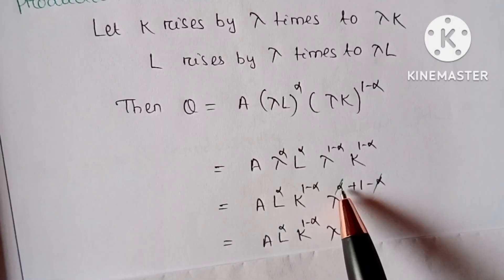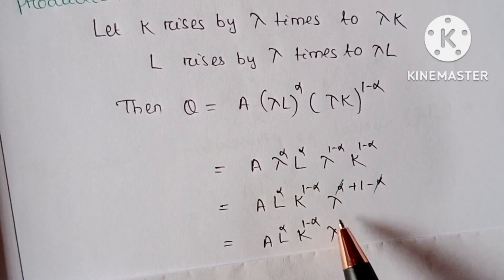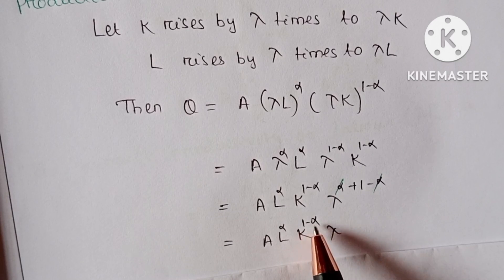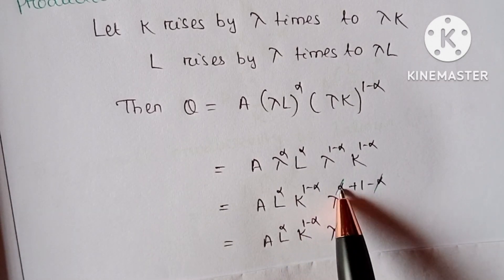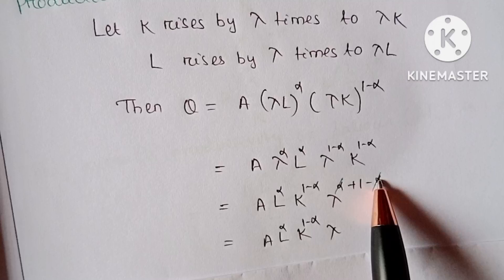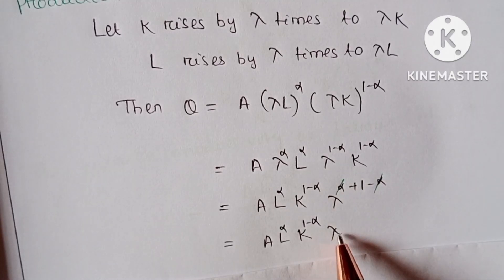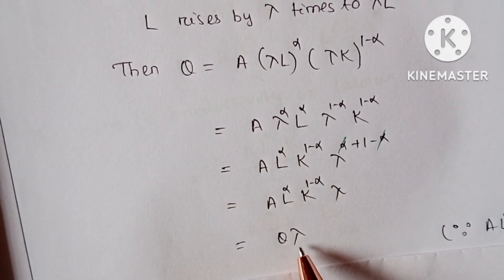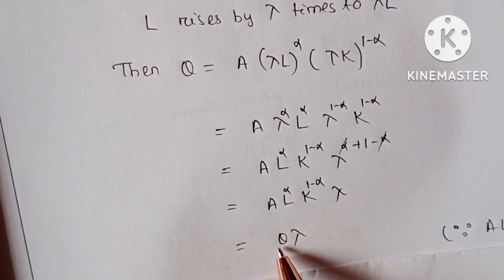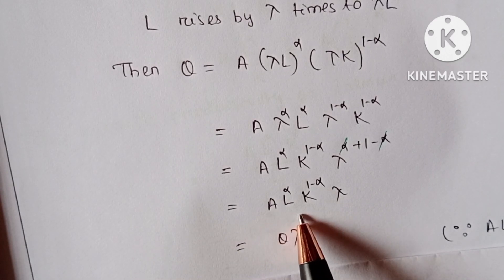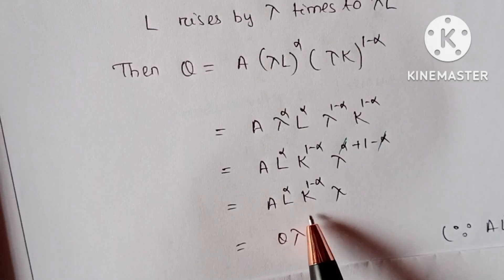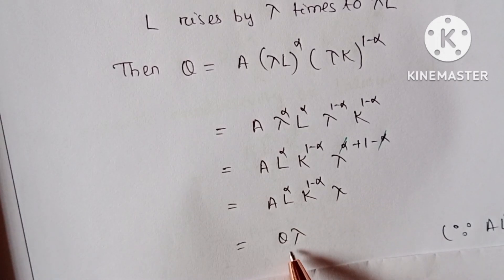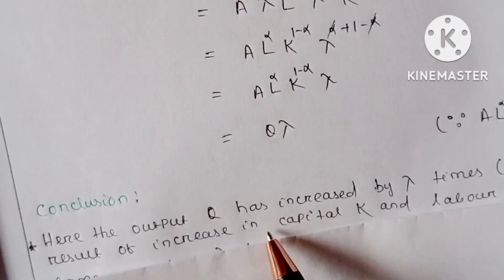Here alpha minus alpha cancel, so we get A into L to the power alpha into K to the power 1 minus alpha into lambda to the power 1, which we can write as lambda times Q, because Q equals A into L to the power alpha into K to the power 1 minus alpha.